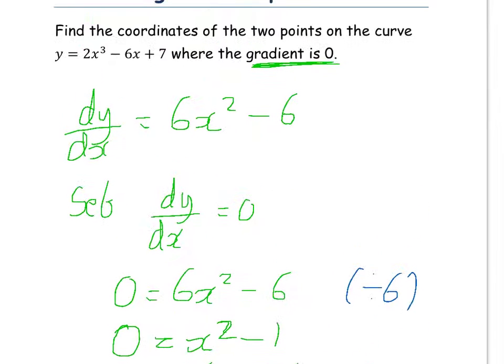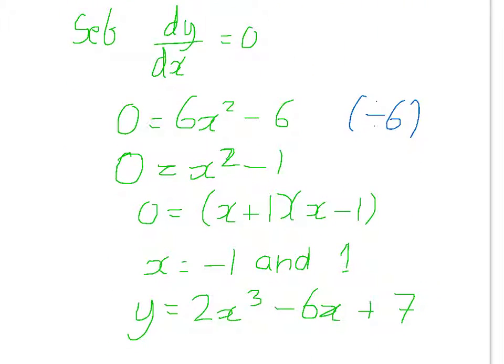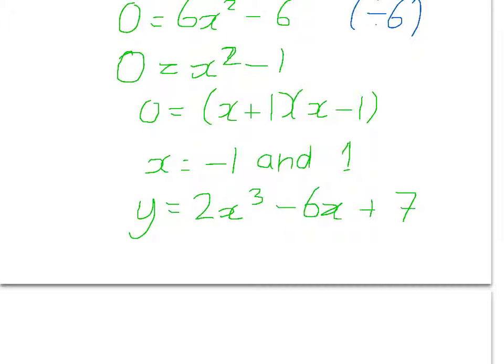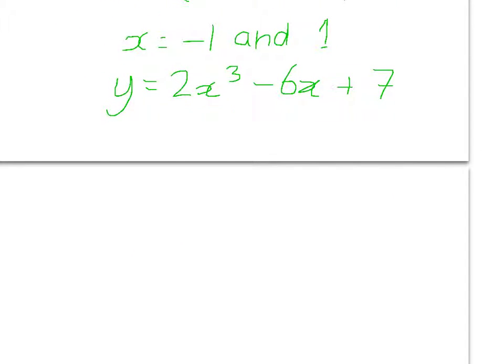Let's just check that's right. So minus 6 plus 7. OK, so now we're going to substitute in our two values for x. So let's just split the page in half. So I've got my x equals minus 1 here and my x equals 1 here.